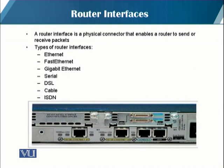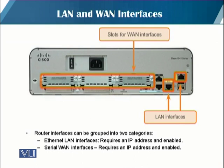A router interface is a physical connector that enables a router to send or receive packets. There are multiple types of interfaces: Ethernet, Fast Ethernet, Gigabit Ethernet, serial, DSL, cable, and ISDN interfaces. For LAN and WAN interfaces, the long slot visible on the router is for WAN interfaces and the two LAN interfaces are the router's LAN ports. These interfaces can be grouped into two categories: Ethernet LAN interfaces, which require an IP address and must be enabled, and serial WAN interfaces, which also require an IP address and must be enabled to perform the connection.